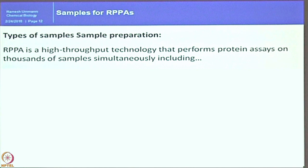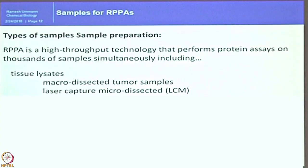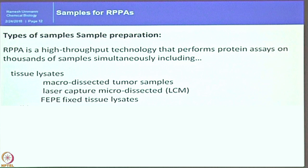It is a high-throughput technology that performs protein assays on thousands of samples simultaneously, including tissue lysates from micro-dissected tumor samples where you get at least microgram-level proteins. With laser capture micro-dissection (LCM) you end up with very low quantities of sample and cannot perform numerous Western blots to validate many targets. PFA-fixed tissue lysates can also be used — separate methods are available to extract protein from formalin-fixed tissues for RPMAs, avoiding the smearing effect seen with Western blotting.